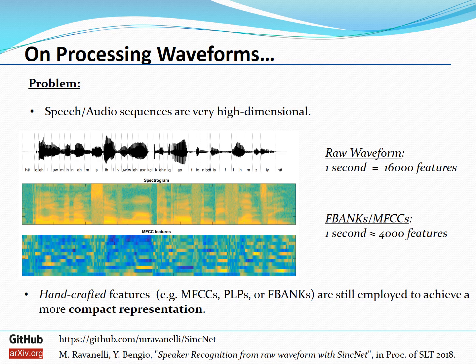Why? Because for instance in one second we can have 16,000 features if the sampling frequency is 16 kilohertz. So we know that working in a very high dimensional space can be very challenging for any machine learning system. So for this reason in speech and audio community what we do is we typically use pre-computed handcrafted features like MFCC, PLP, filter banks, all these kind of representations that help to achieve a more compact representation of your input signal.